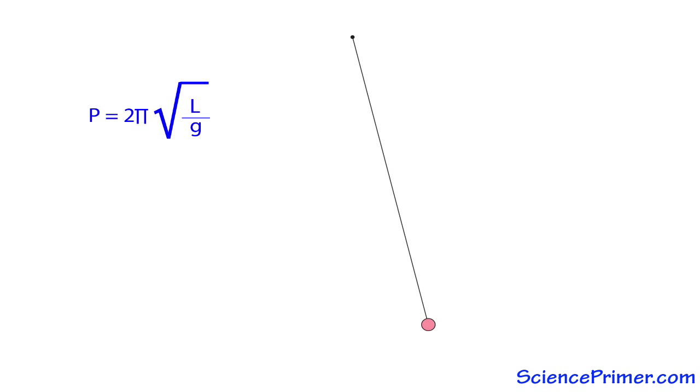One thing to note about the relationship is how few variables are involved. If the force of gravity, 9.8 meters per second squared on Earth, and the length of the pendulum is known, the pendulum can be used to tell time.